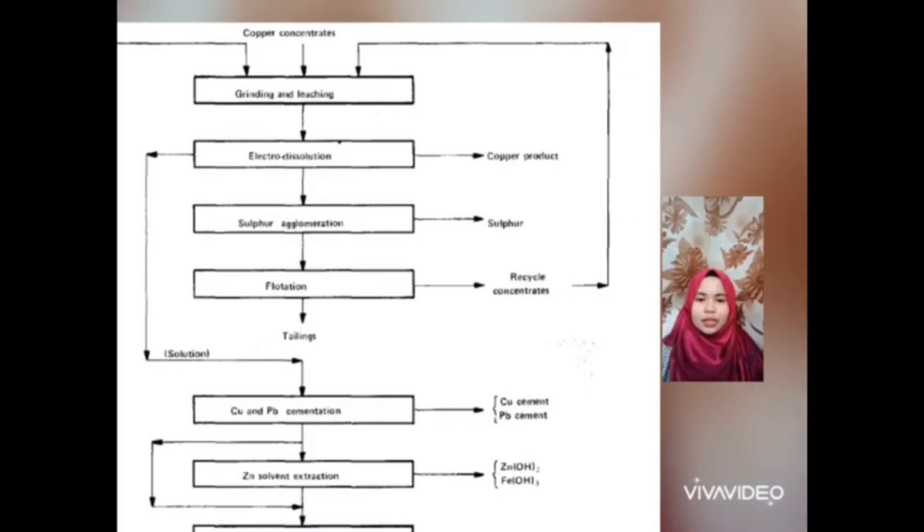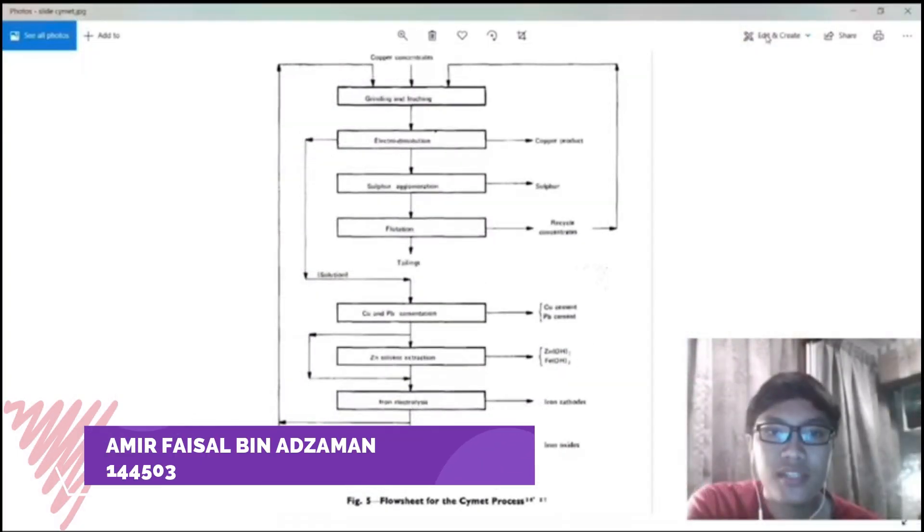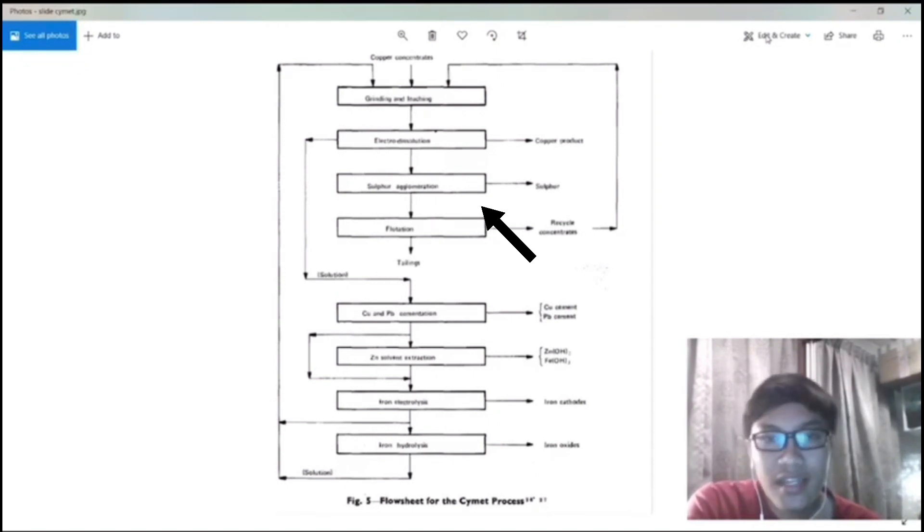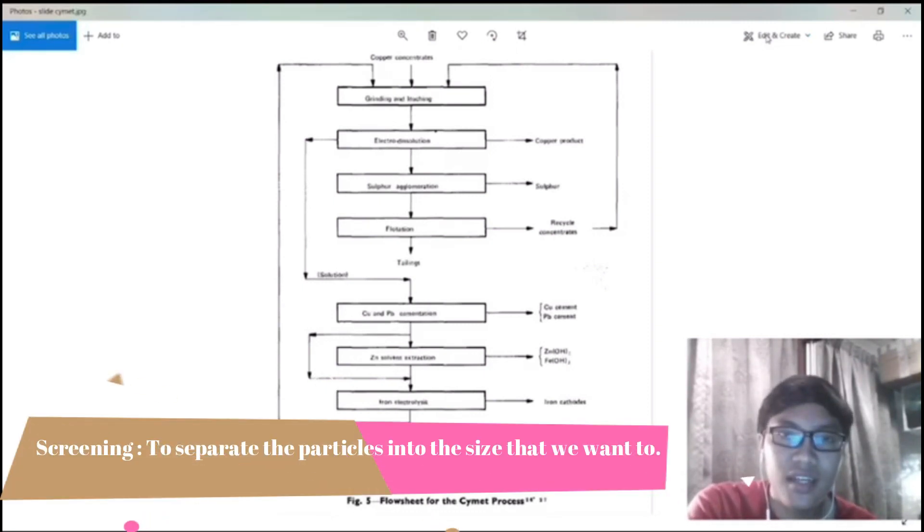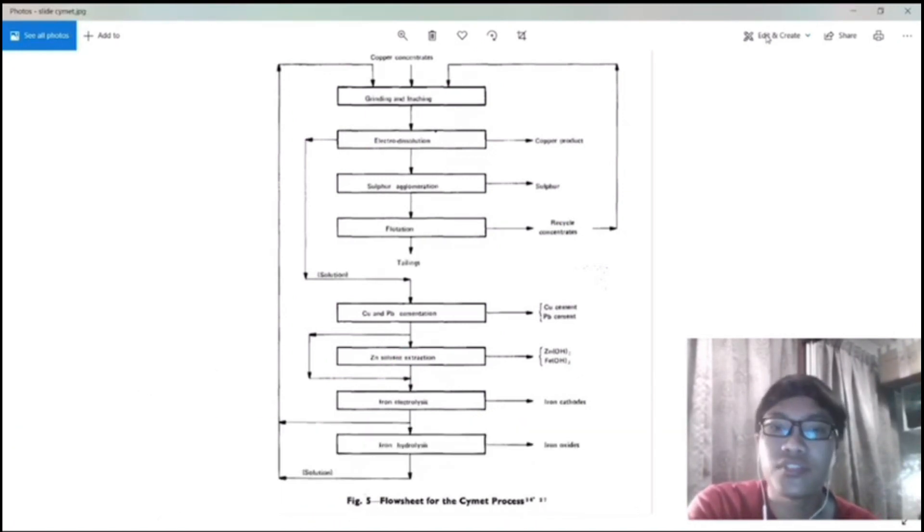After we do the grinding and leaching, we go to the electro-dissolution leaching process. We will do the electro-dissolution to produce the copper product. The next process is sulfur agglomeration. The solid from grinding and leaching process will undergo sulfur agglomeration to produce sulfur. In this process, the particle will undergo freezing and screening process, and particles that have overlap size will go to the next process, which is flotation.